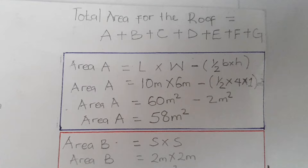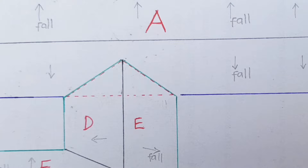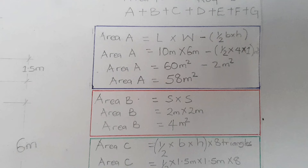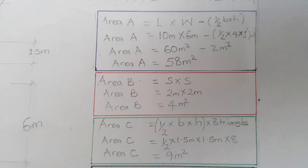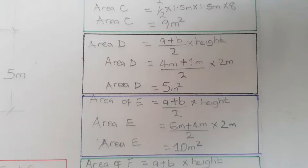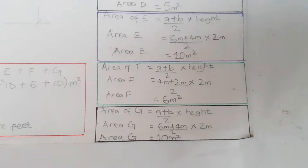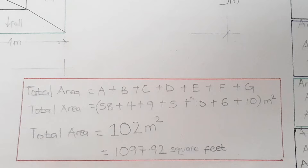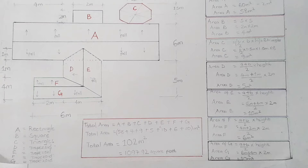The total area for the roof is found by adding plan areas for shapes A, B, C, D, E, F, and G. Area for A is 10 meters × 6 meters minus the red dotted section. Area for B uses the square formula, and area for C uses the triangle formula. After adding up all these areas, the total area is 102 square meters, or 1,097.92 square feet. In roofing squares, that is square footage ÷ 100 = 10.97 squares.